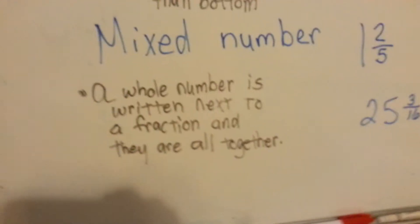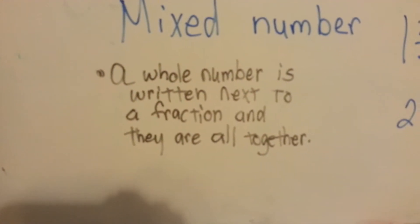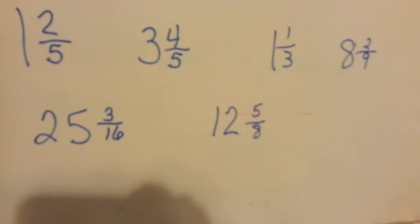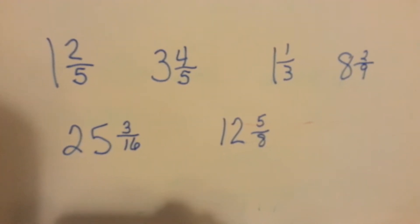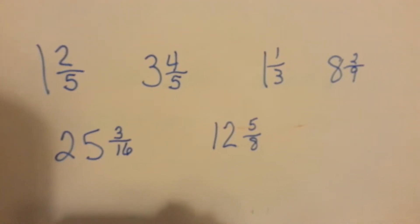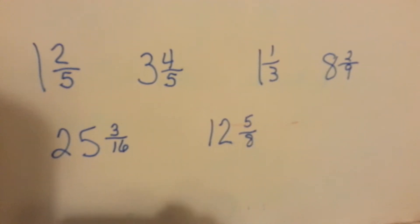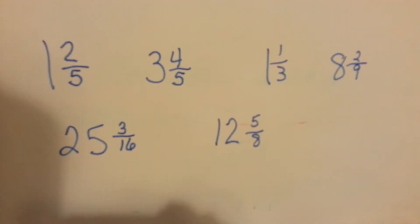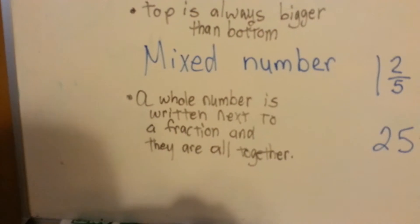The last type of fraction is called a mixed number. It's a whole number written next to a fraction, but it's all together as one number. These are mixed numbers. You've got 1 and 2 fifths, 3 and 4 fifths, 1 and 1 third, 8 and 2 ninths, 25 and 3 sixteenths, or 12 and 5 eighths.